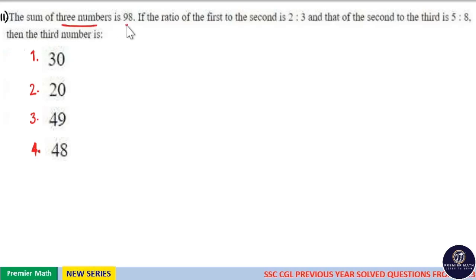The sum of three numbers is 98. If the ratio of the first to the second is 2 to 3, and that of the second to the third is 5 to 8, then the third number is: